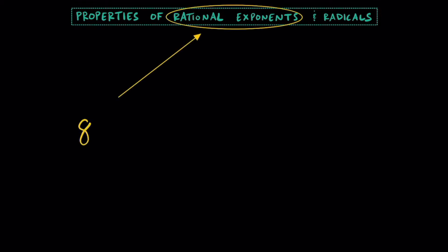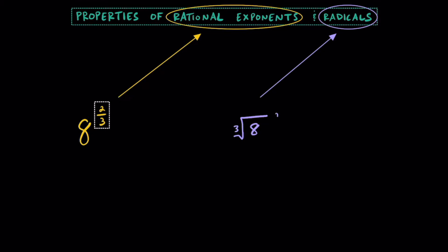By rational exponents, I mean something like this, where we have 8 raised to the 2 thirds power. This exponent of 2 thirds is rational. And by radicals, I mean something like this, where we have something like the cube root of 8 raised to the second power.